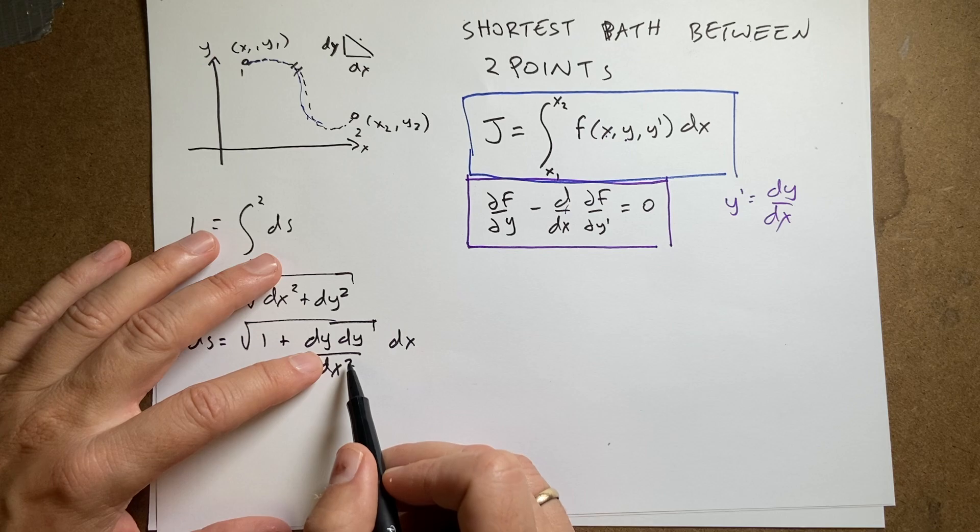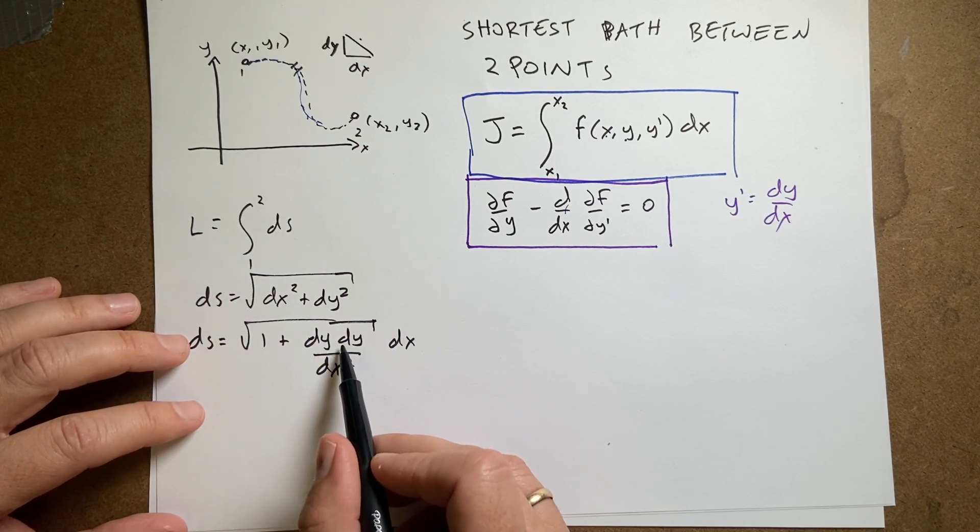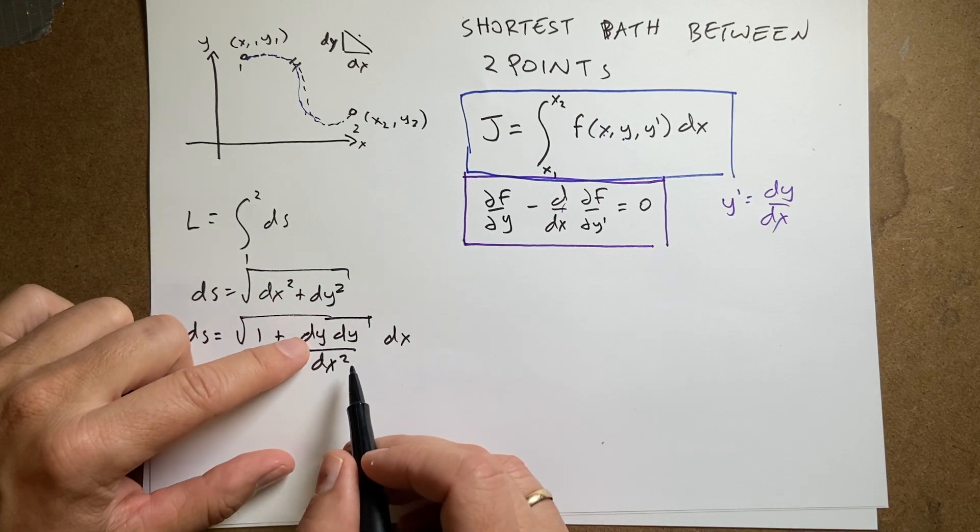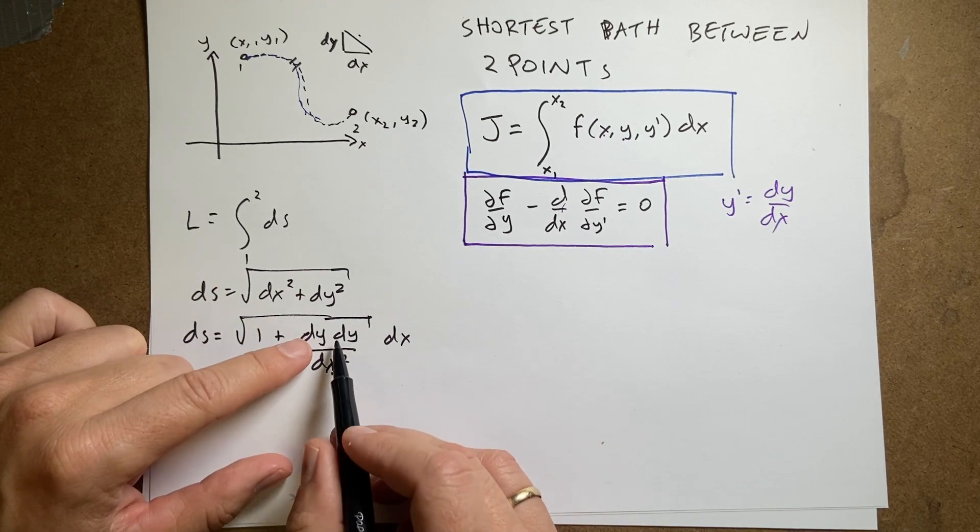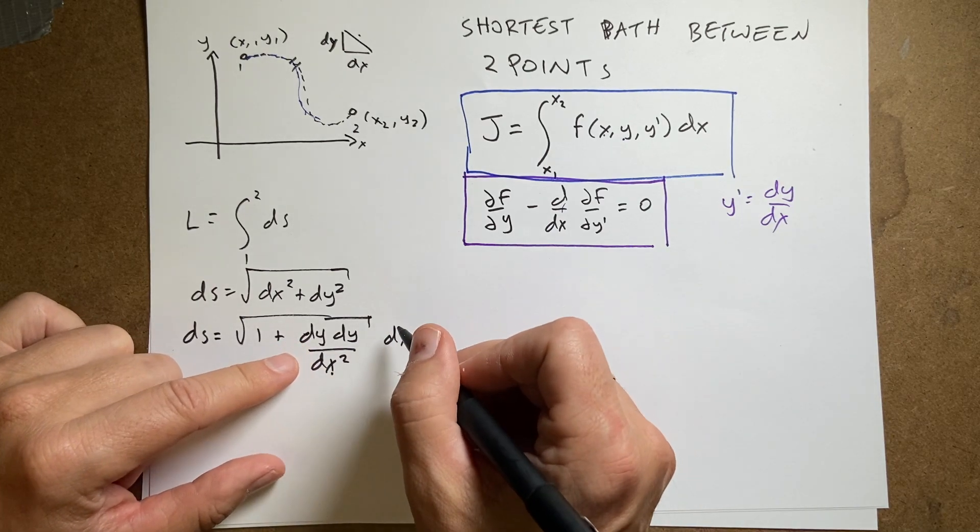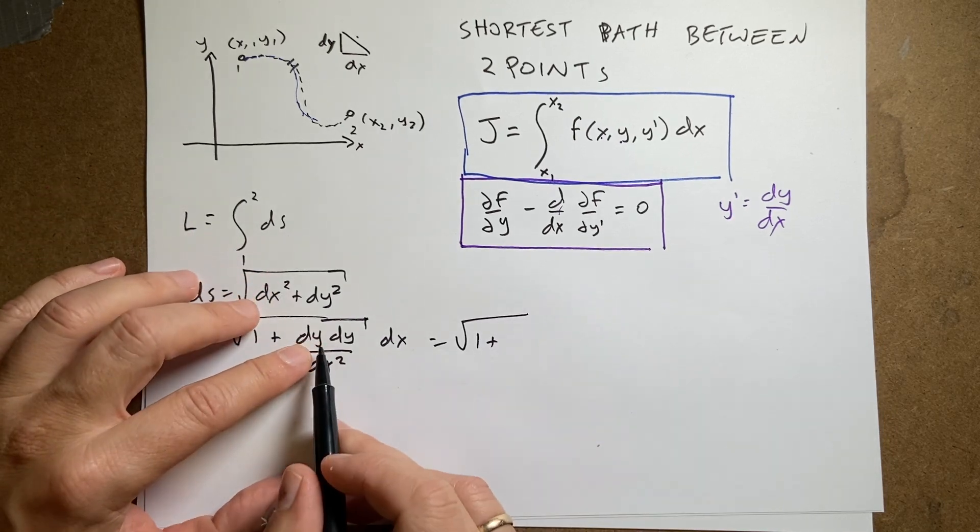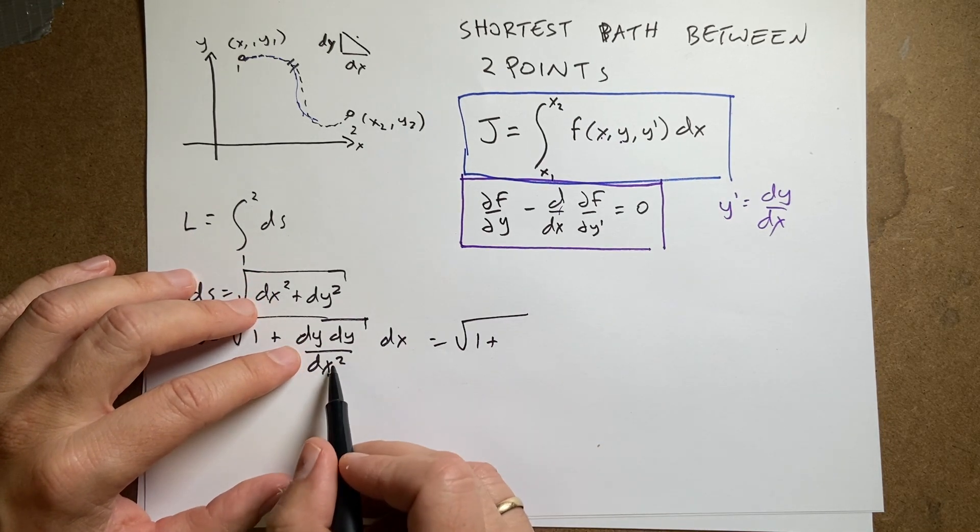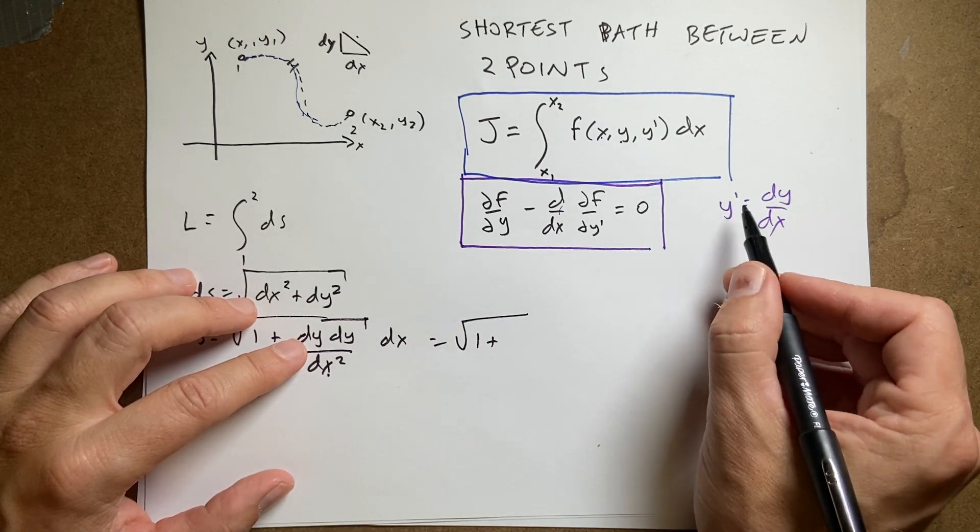Yeah, that's right. So, then I have, this is dy dx squared, right? I should have left it that way. So, it's equal to the square root of 1 plus dy dx, quantity squared. It's not the second derivative. It's the quantity squared. So, this is actually y prime squared.